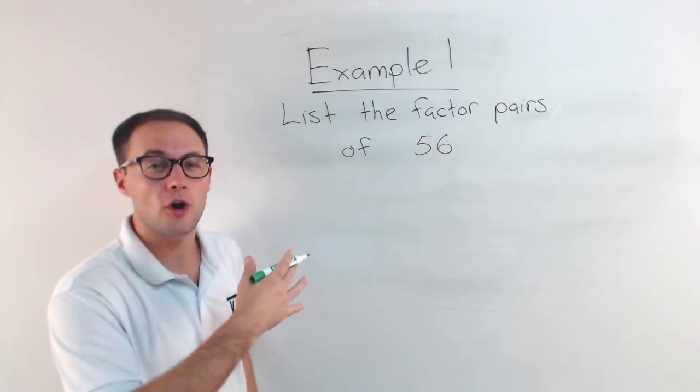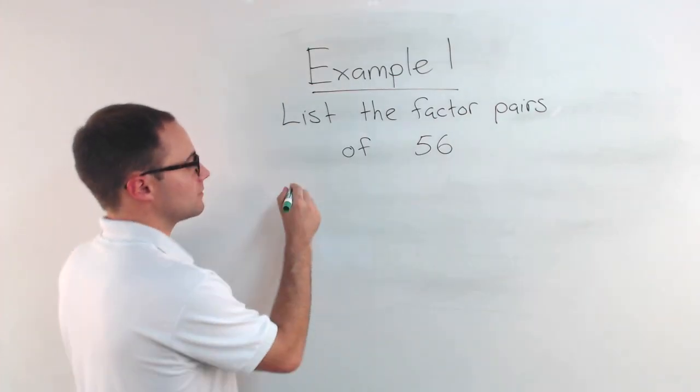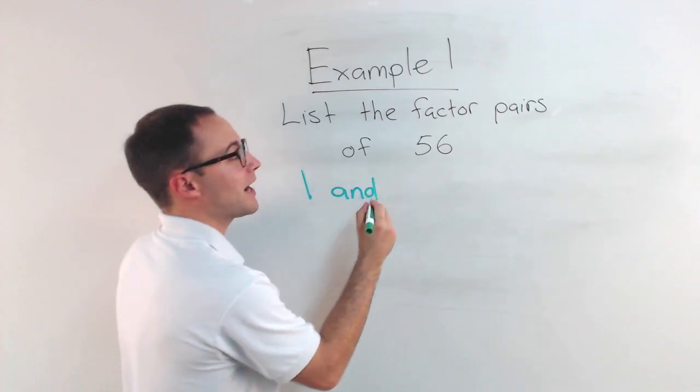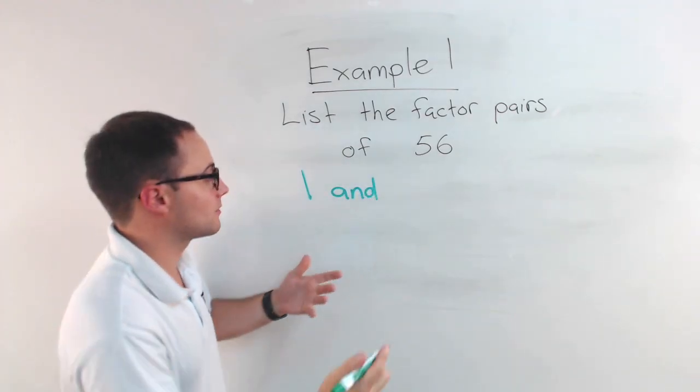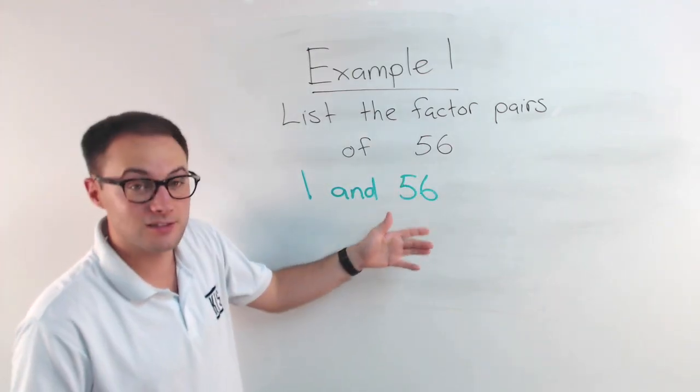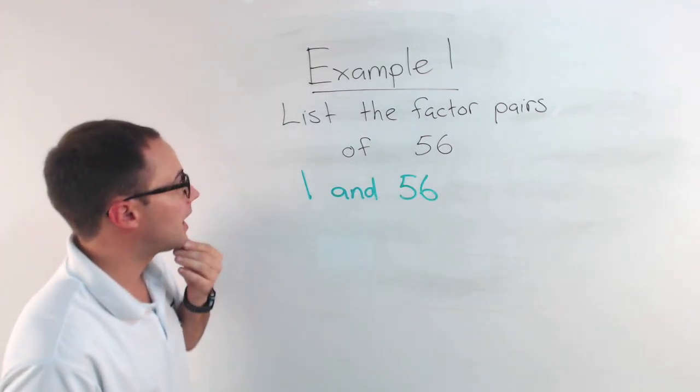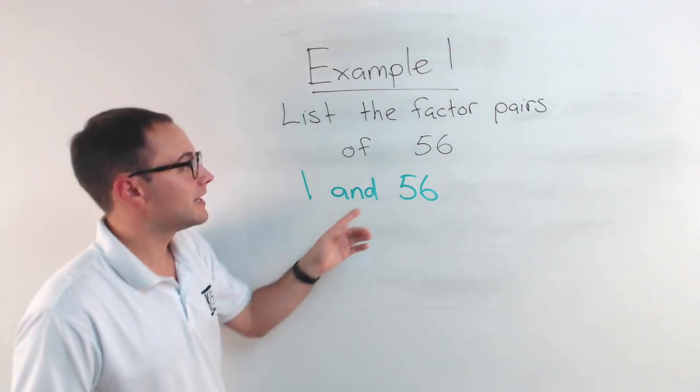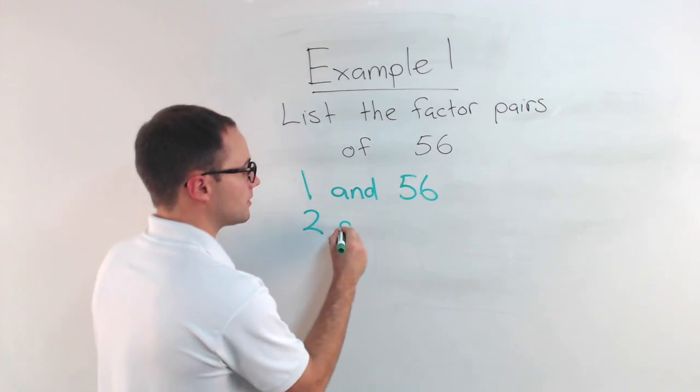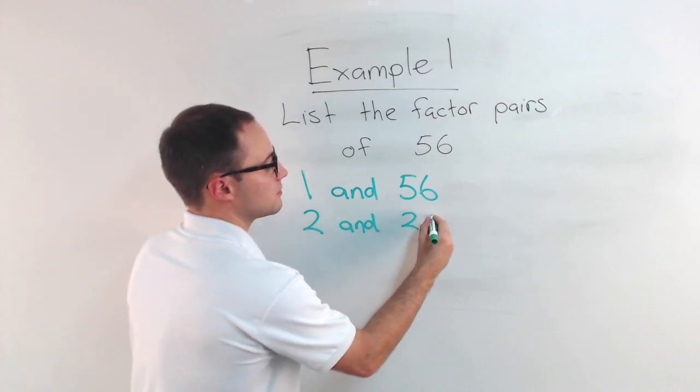And like I said before, always start with one. One is always going to be a factor, and we're listing them as pairs. So one times what is 56? Well, one times 56 is 56. 56 is also a factor. And then just go in order. It's an even number, so two is going to work. Two is a factor. Two and 28.